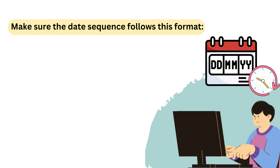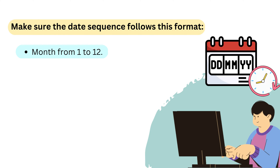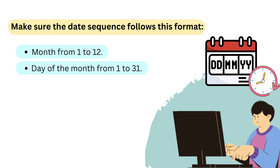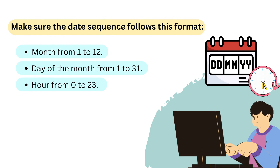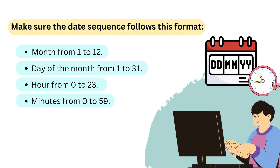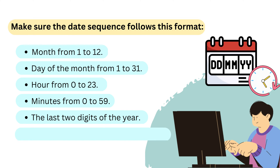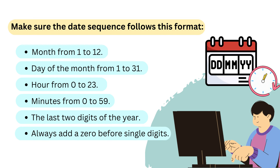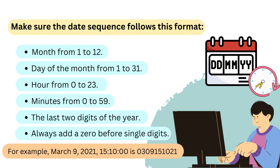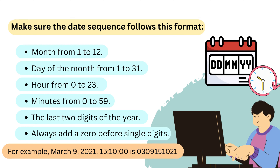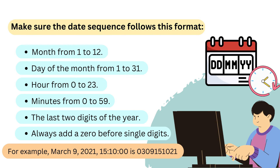Make sure the date sequence follows this format: month from 1 to 12, day of the month from 1 to 31, hour from 0 to 23, minutes from 0 to 59, and the last two digits of the year. Always add a zero before single digits. For example, March 9, 2021, at 15:10 is entered as 0309151021.